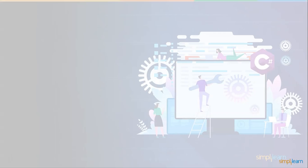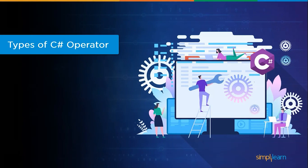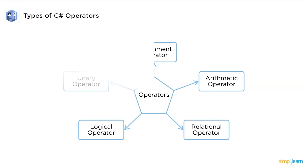Now let's have a look at the types of operators. There are five types of operators in C#: first, assignment operators; then arithmetic operators; relational operators; logical operators; and unary operators.